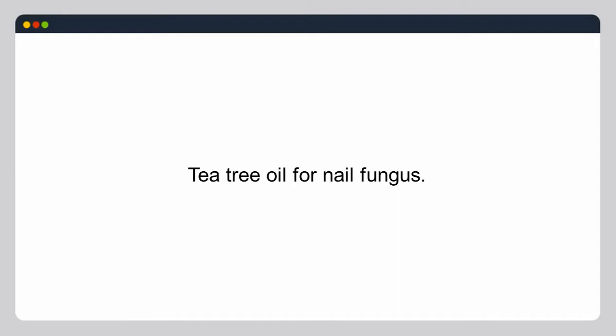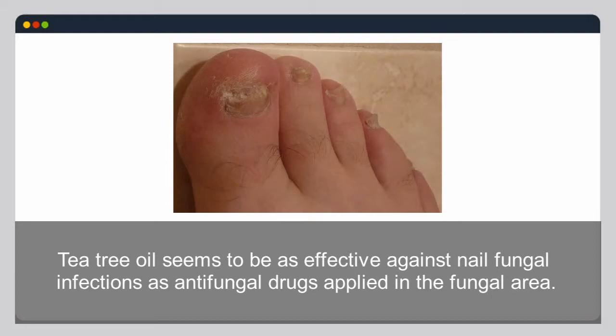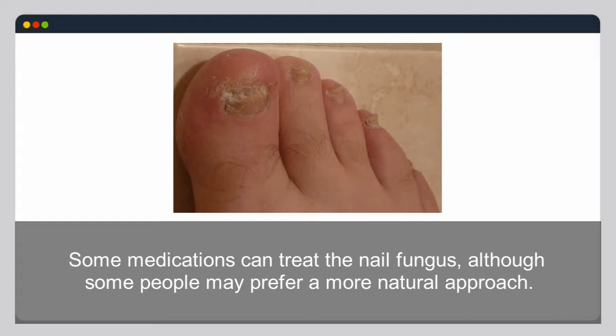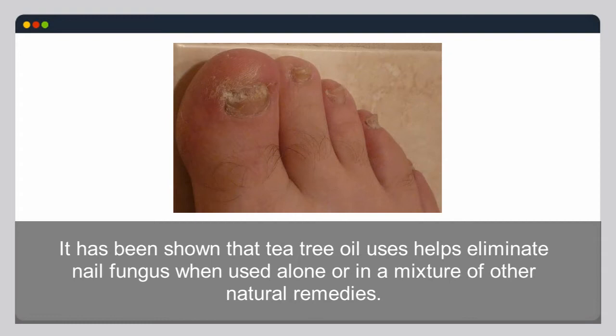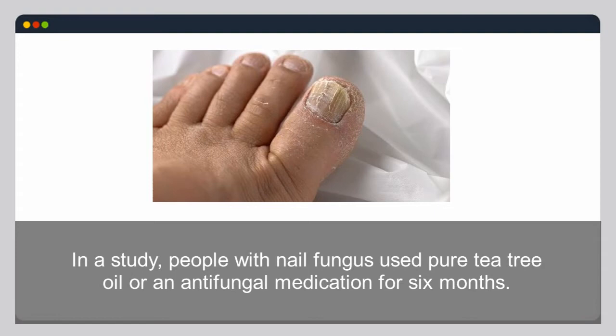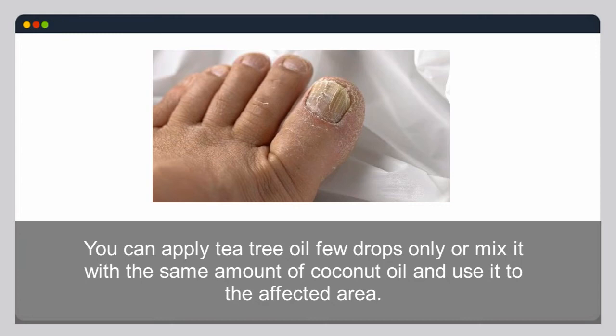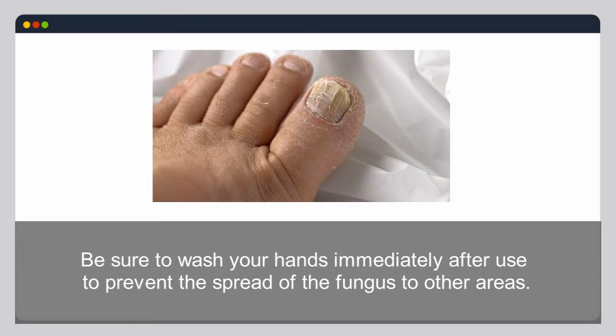Tea tree oil appears to be as effective against nail fungal infections as antifungal drugs. Fungal nail infections are common; while not severe, they can be deforming. In a study, people with nail fungus used pure tea tree oil or an antifungal medication for six months, and approximately 60 percent in each group experienced partial or total resolution of the fungus. You can apply a few drops of tea tree oil alone or mix it with an equal amount of coconut oil, applying to the affected area and washing hands immediately after to prevent spreading.